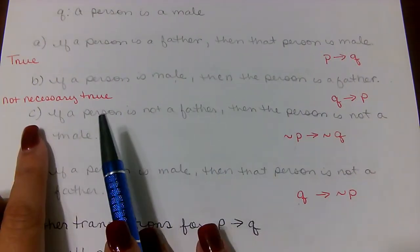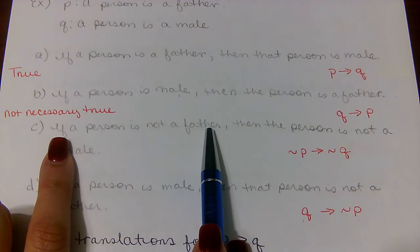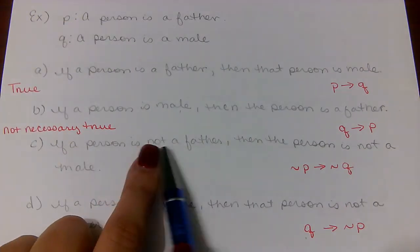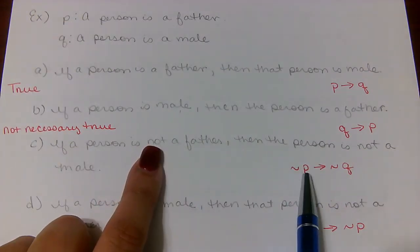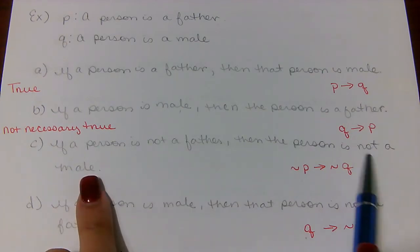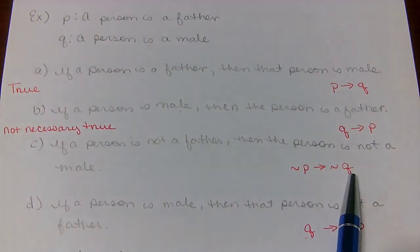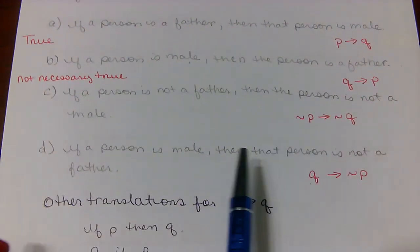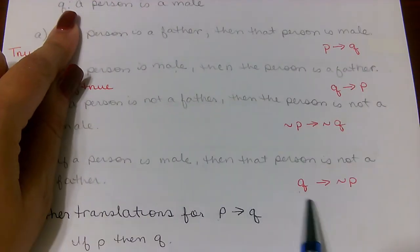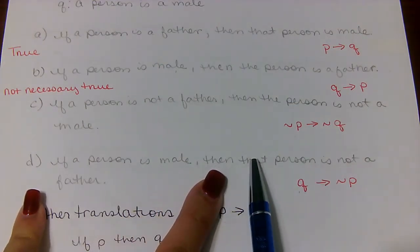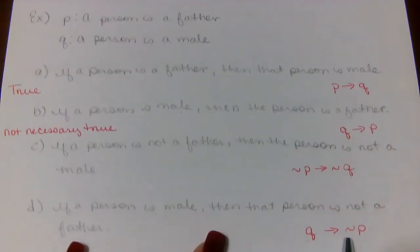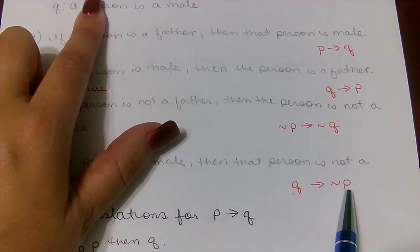Let's look at part C: if a person is not a father — notice that this is similar to P except we have the word 'not' — so we use the squiggly line to get ¬P, then the arrow, then a person is not a male. There's the 'not' sign, and since 'male' refers to Q, we have ¬P → ¬Q.